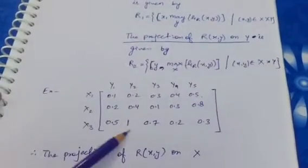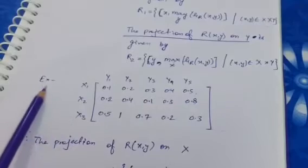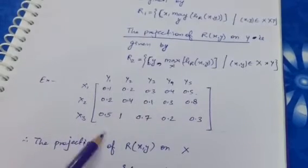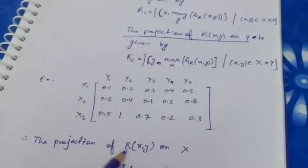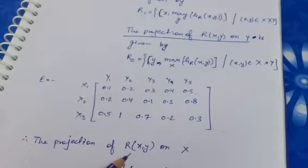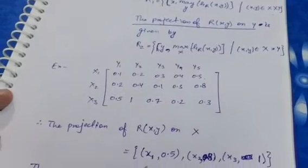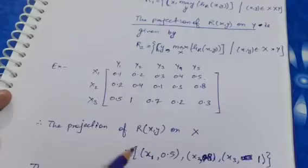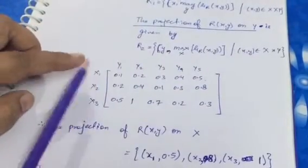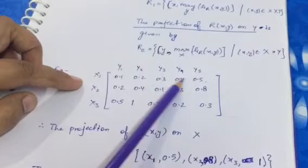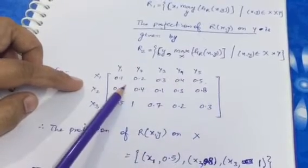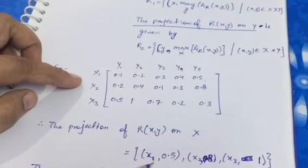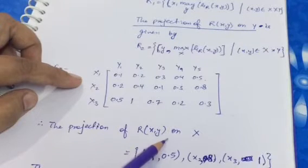So take this fuzzy relation. Here a fuzzy relation is given and we are asked to find the projection of relation R(xy) on X. What we have to do is find the projection for each X value and find the maximum of it. For x1, we look at the complete row and take whichever value is maximum — that is the projection of R(xy) on X.